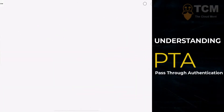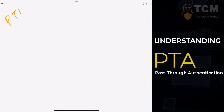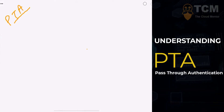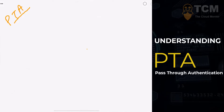We're back to the drawing board. We're talking about something called Pass Through Authentication, acronym PTA. Azure Active Directory Pass Through Authentication allows your users to sign into both on-premises and also SaaS-based applications using the same password.